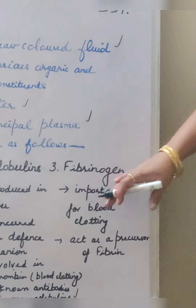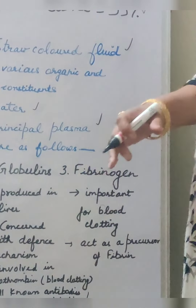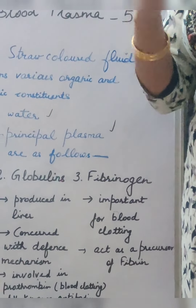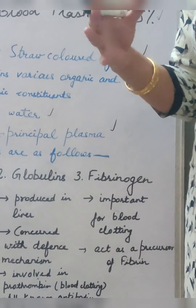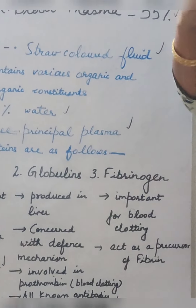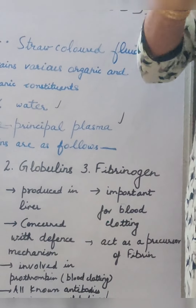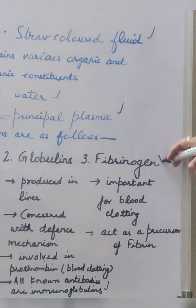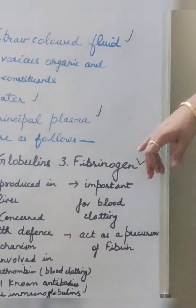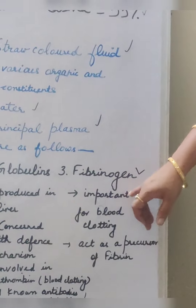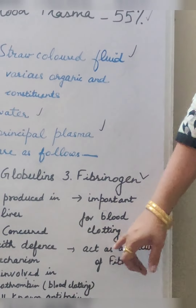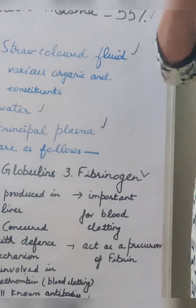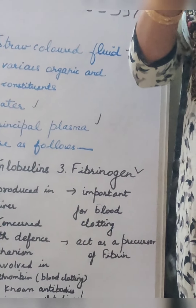Third one is fibrinogen. It is important for blood clotting and acts as a precursor — fibrinogen converts into fibrin, and then we get a clot at the point of injury.